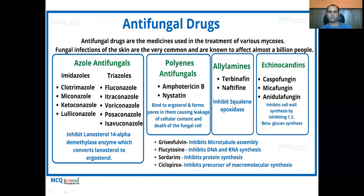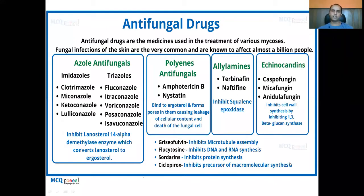Griseofulvin is known to inhibit microtubule assembly. Flucytosine inhibits DNA and RNA synthesis. Sordarins inhibit protein synthesis. And ciclopirox inhibits macromolecular synthesis involved in the cell membrane, so there will be leakage of intracellular contents.